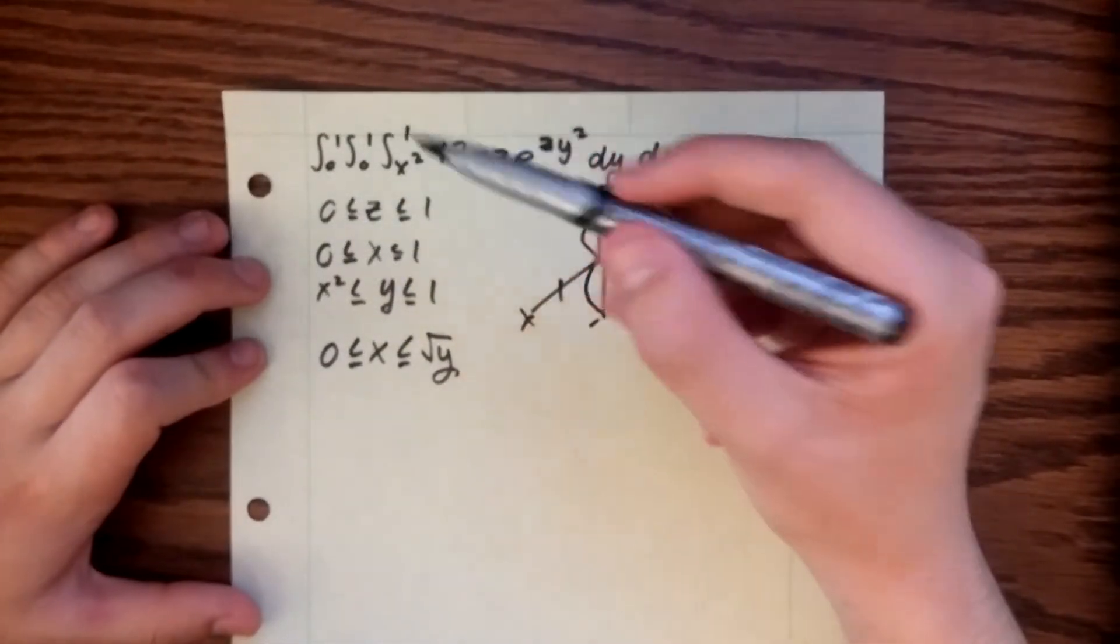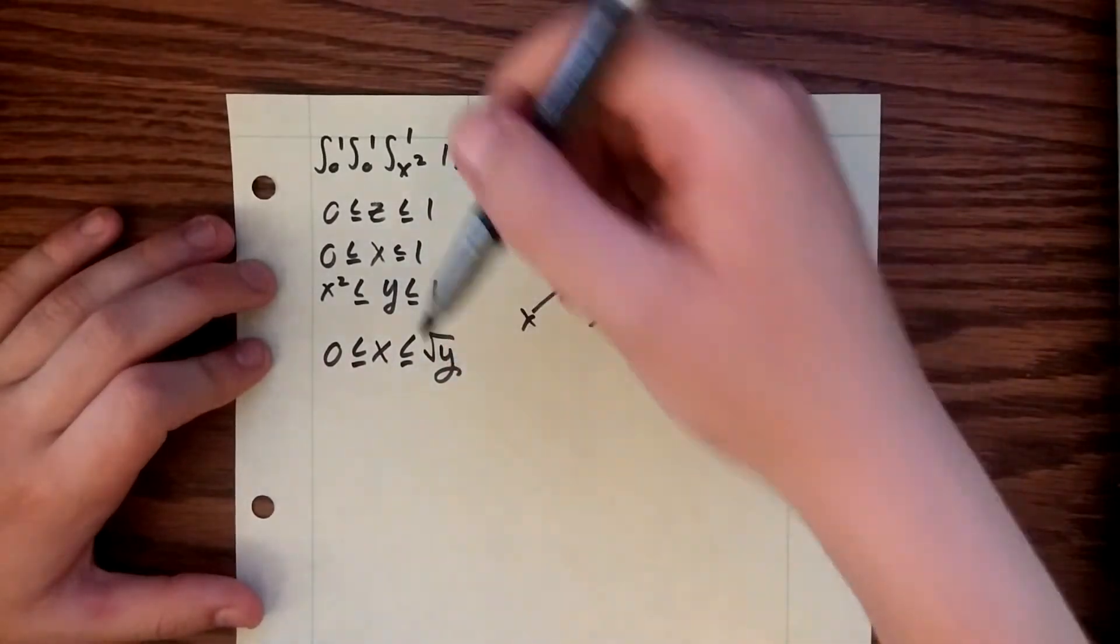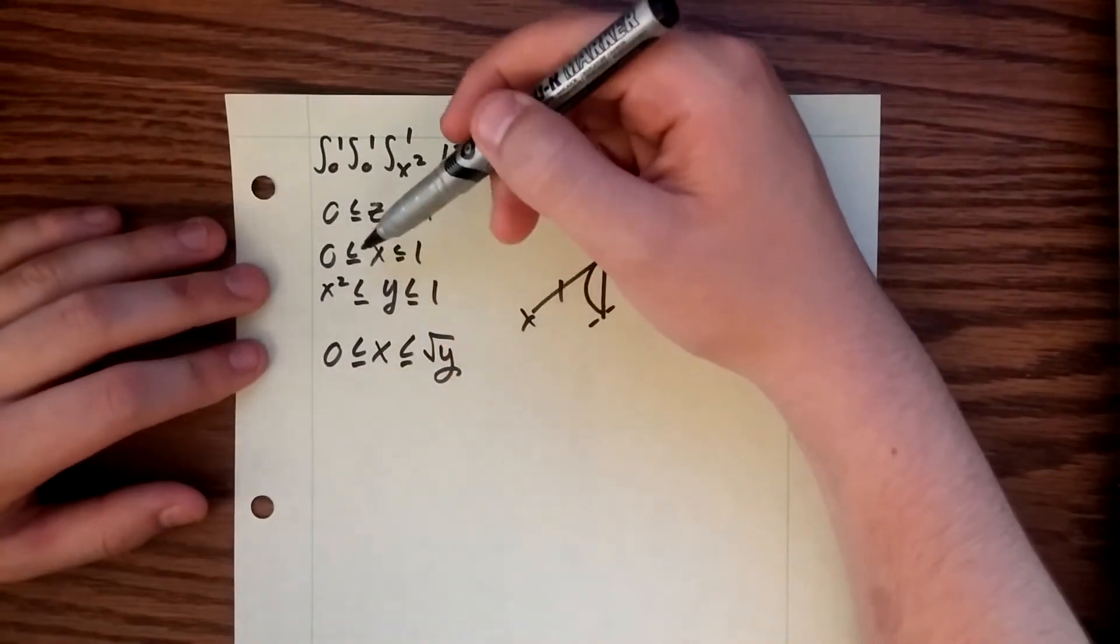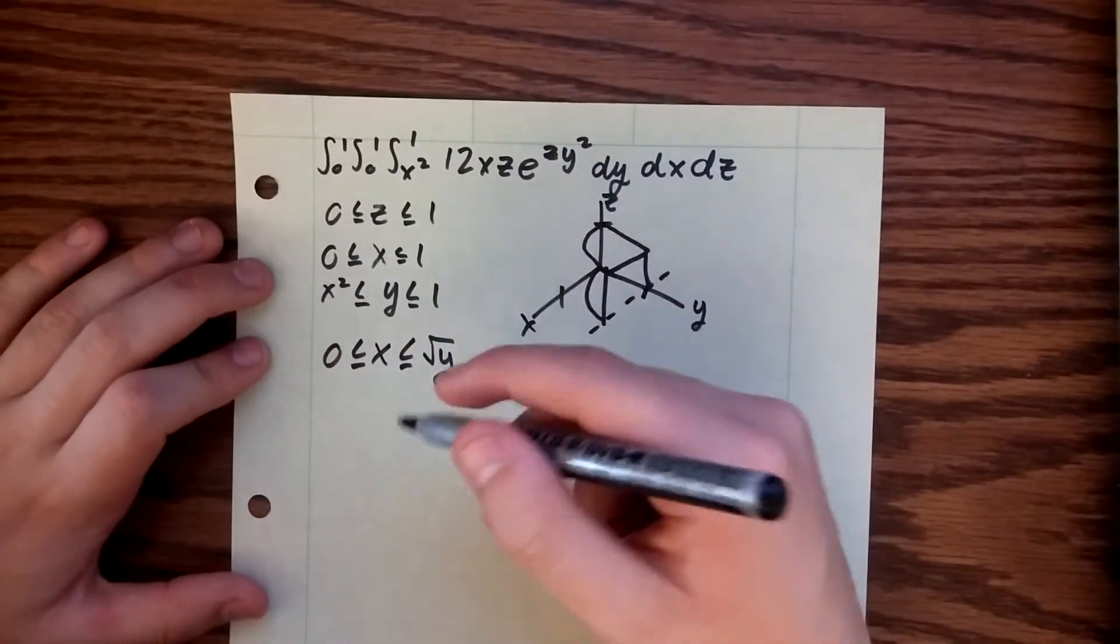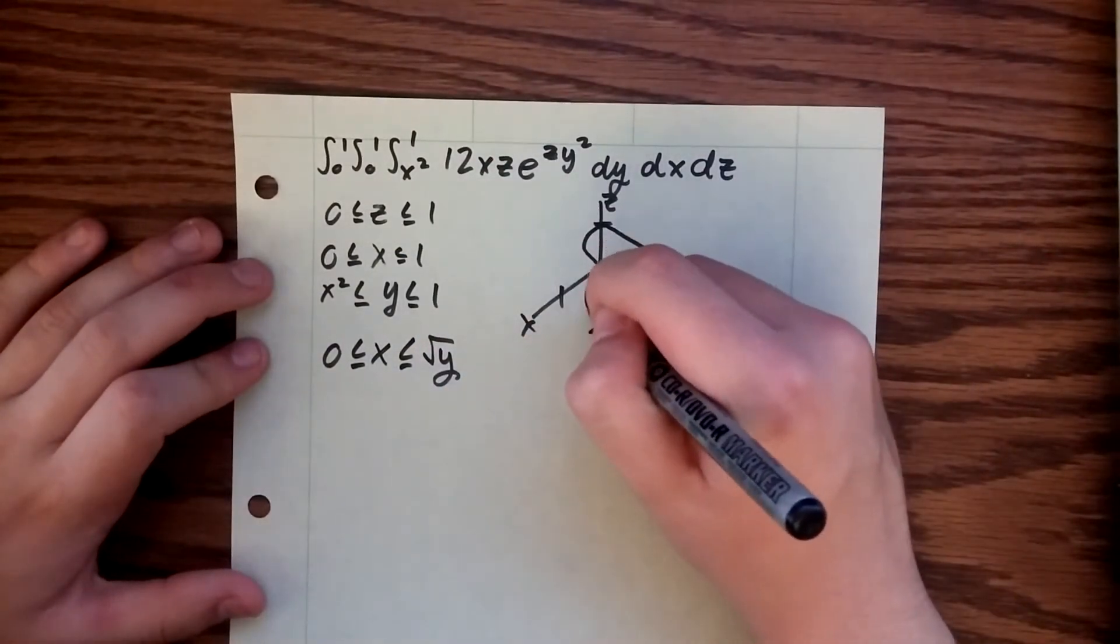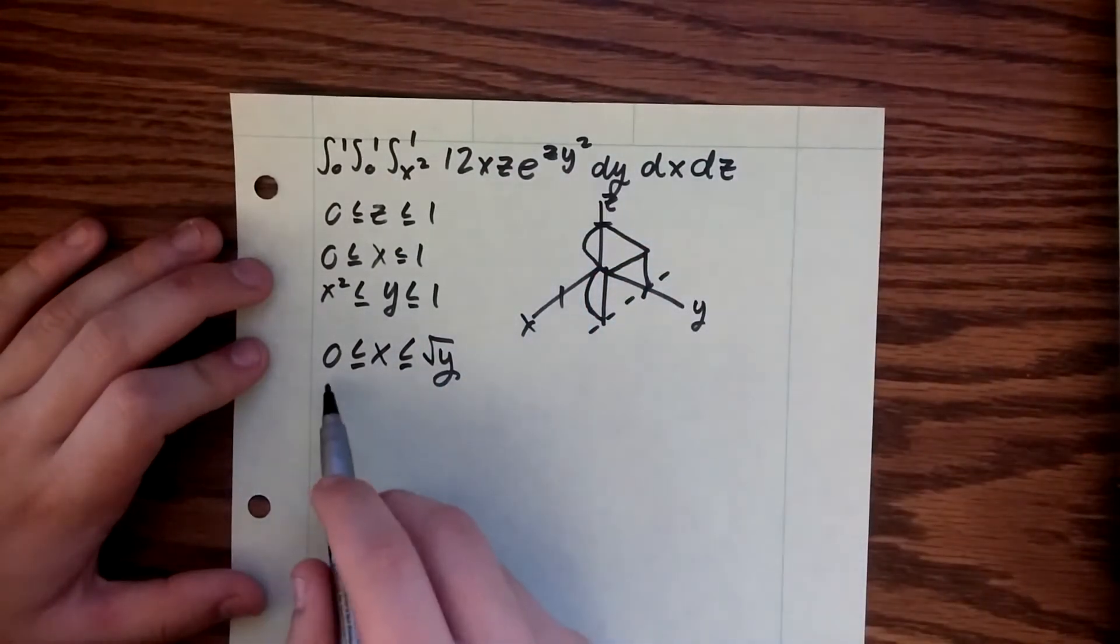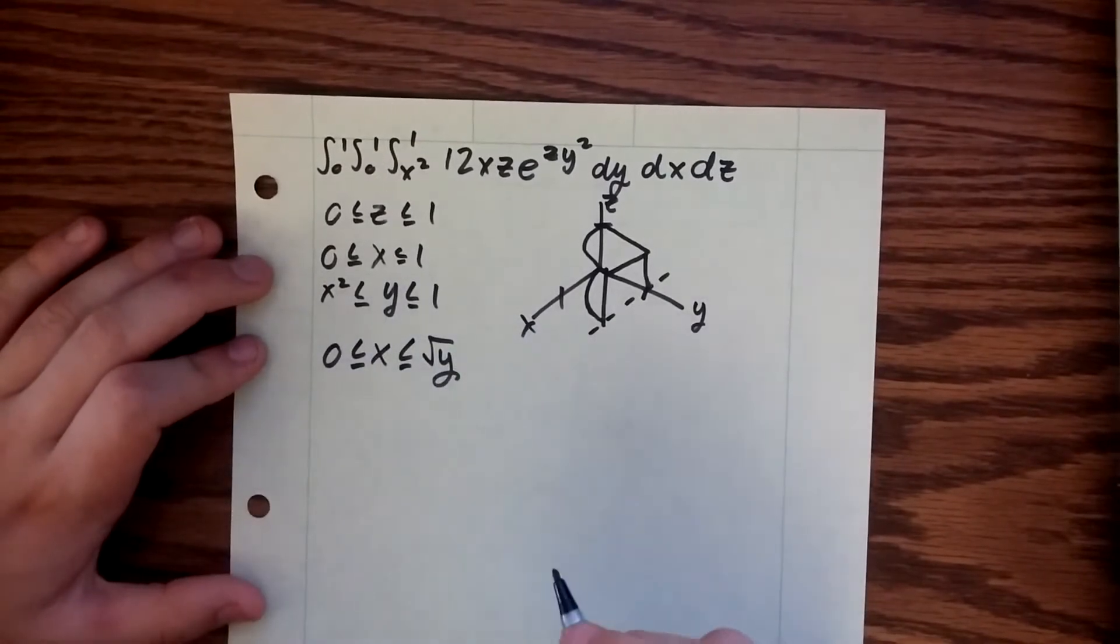Then, since we know that x goes from 0 to 1 in our initial bounds, we now know that our y bounds are going to go from 0 to 1, since this line here is taken care of by the first bounding function.